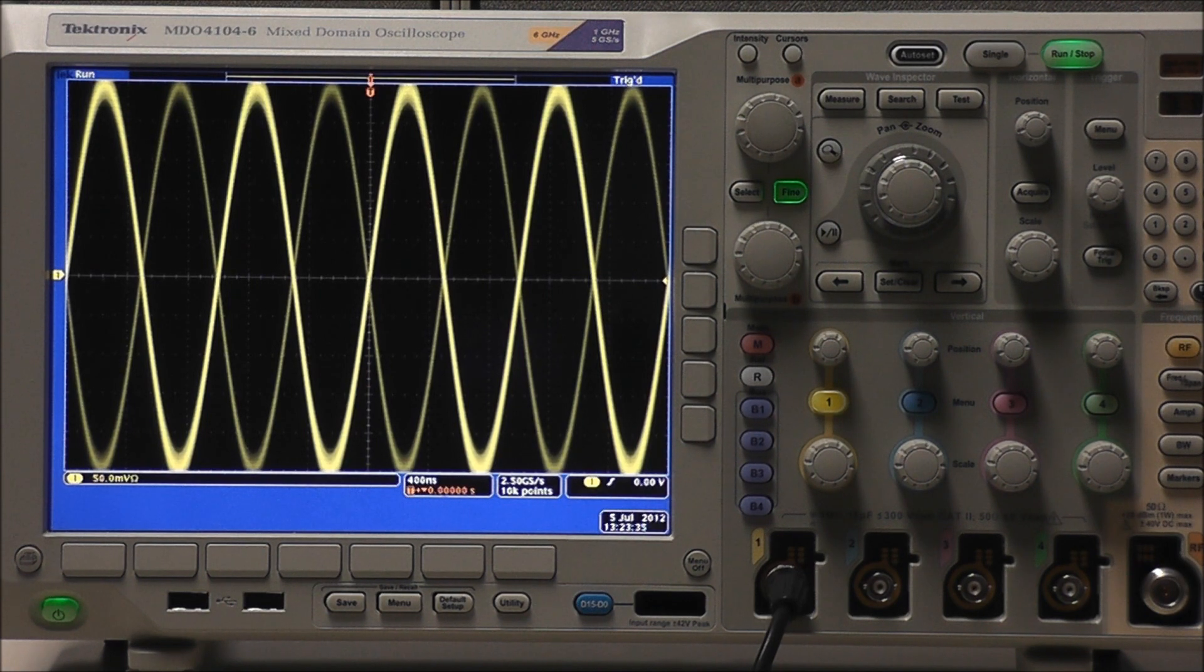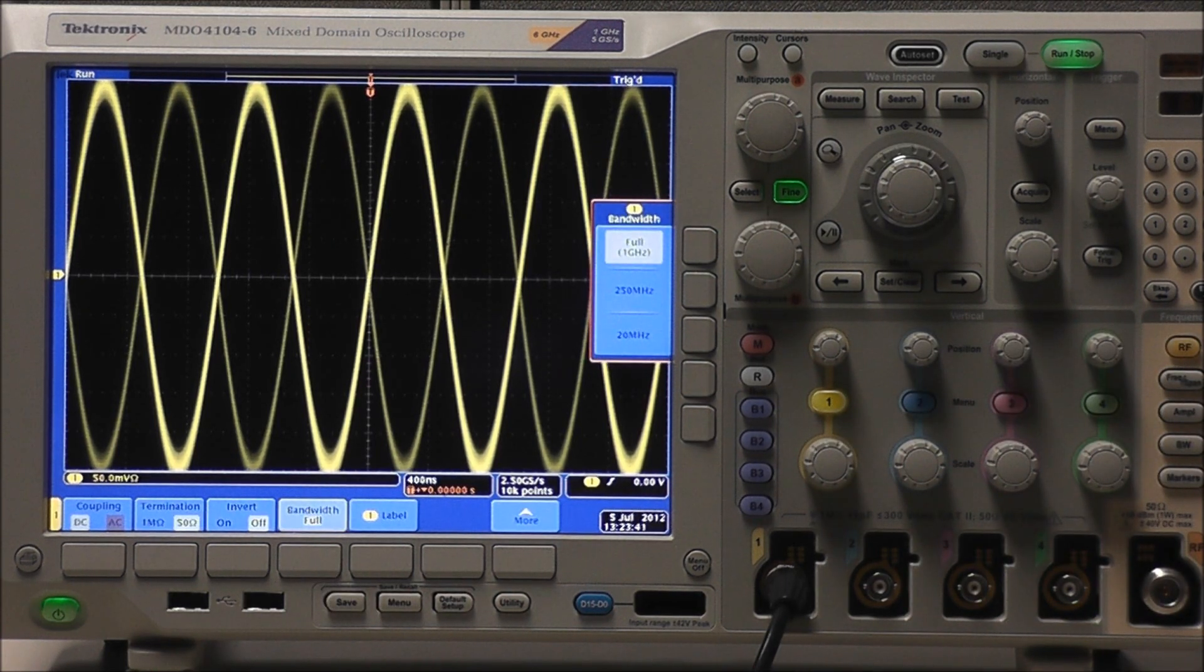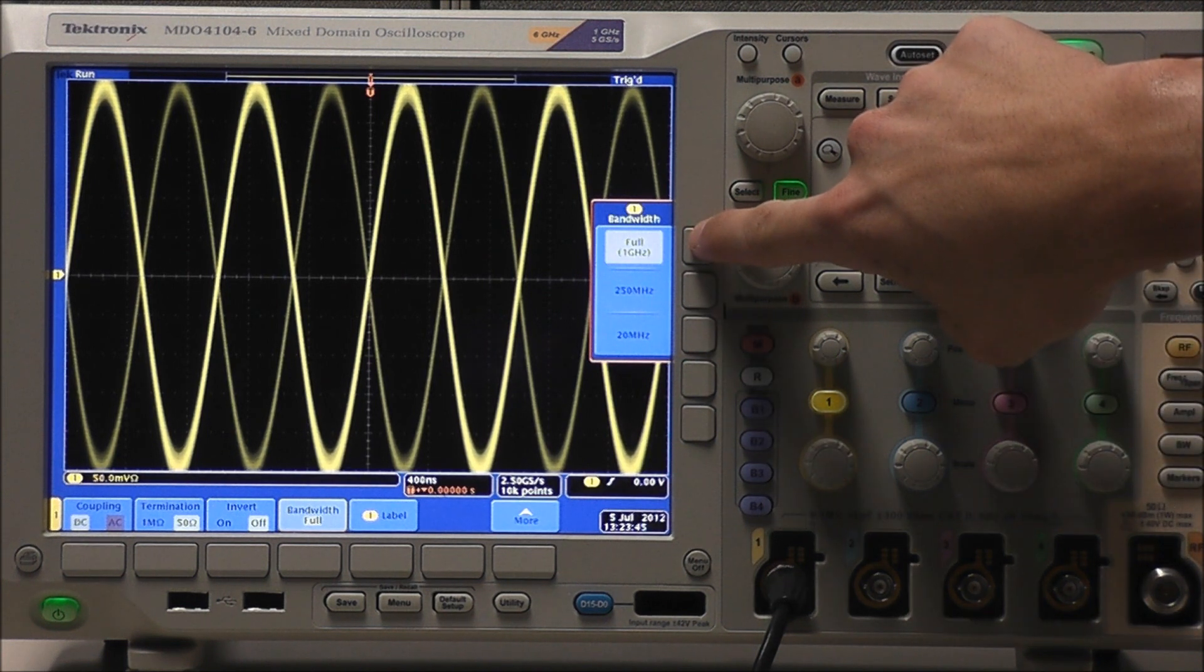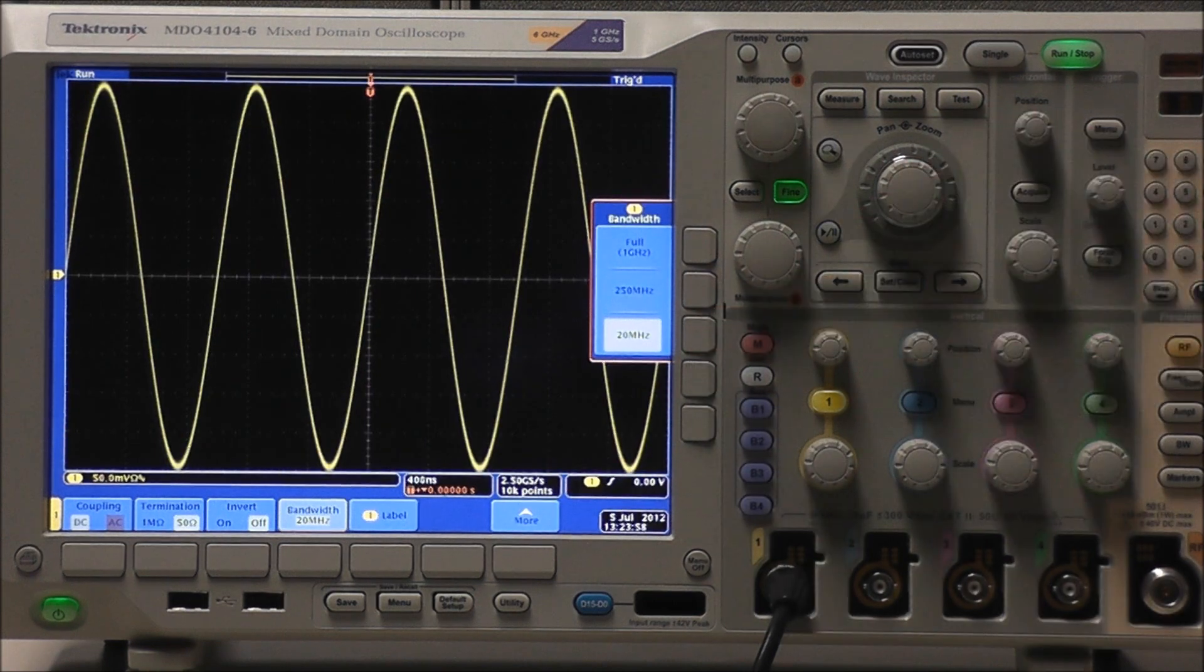We can reduce the input bandwidth limit which acts as an analog low-pass filter. Select channel 1 followed by bandwidth and we have three options to choose from: full or 1 gigahertz which we are currently running. Now obviously the machine is going to read every signal with a frequency less than 1 gigahertz. 250 megahertz and we can see a subtle noise reduction there. But if we select 20 megahertz we can see a very substantial noise reduction.